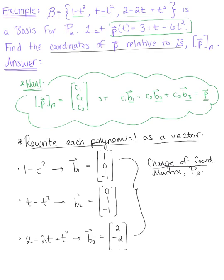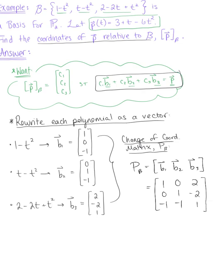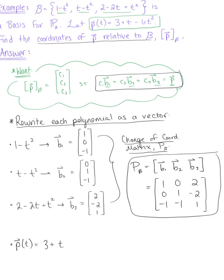Using these column vectors, we define the change of coordinates matrix P_b, whose columns are b₁, b₂, b₃. This gives us the 3×3 matrix: [1, 0, 2; 0, 1, -2; -1, -1, 1]. We also rewrite the polynomial p(t) = 3 + t - 6t² as the column vector [3, 1, -6].